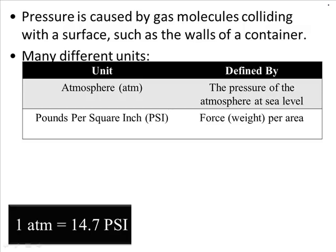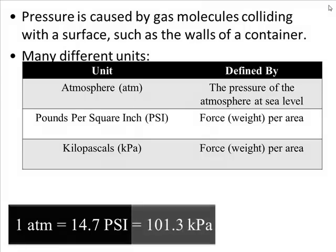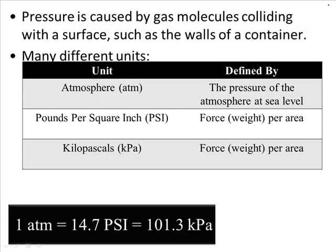Another closely related unit is the metric equivalent of PSI: kilopascals. This is a metric unit measuring force per area. There are about 101.3 kilopascals, or kPa, in one atmosphere, or 14.7 pounds per square inch. You'll encounter kilopascals in any scientific or engineering field.